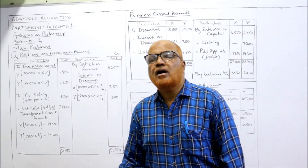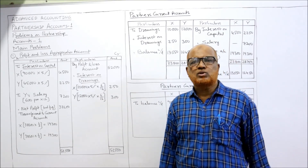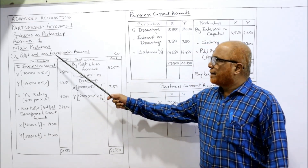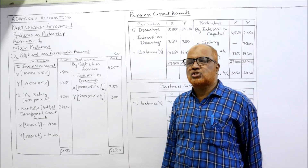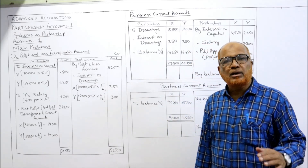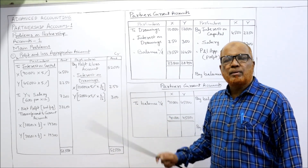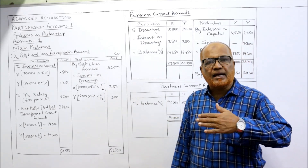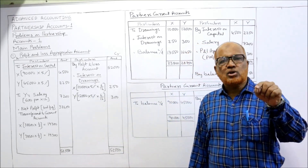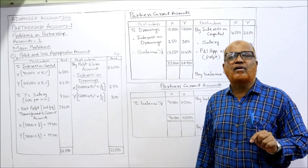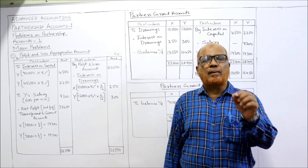First we prepare the profit and loss appropriation account. On the credit side we take the profit before adjustment — by profit and loss account: 52,000. Now, interest on capital is an expense to the firm so it goes on the debit side. Interest on drawings is income to the firm so it goes on the credit side. The rate of interest on capital is 5% and interest on drawings is also 5%.